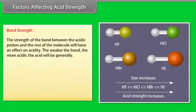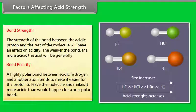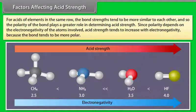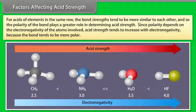Factors affecting acid strength: Bond strength — the weaker the bond between the acidic proton and the rest of the molecule, the more acidic it will be. Bond polarity — a highly polar bond between the acidic hydrogen and another atom makes it easier for the proton to leave, making the acid stronger. For acids of elements in the same row, bond strengths are more similar, so polarity plays a greater role. Acid strength tends to increase with electronegativity because the bond tends to be more polar.